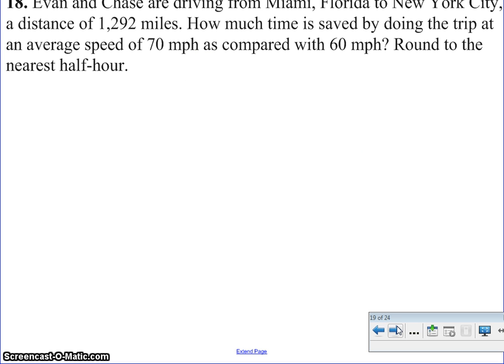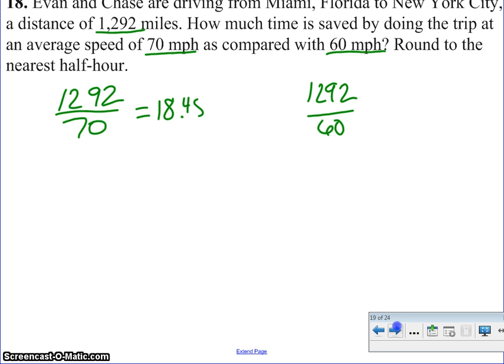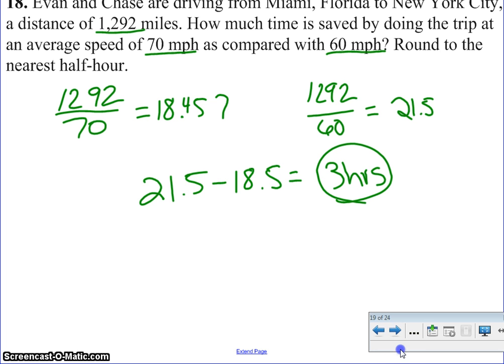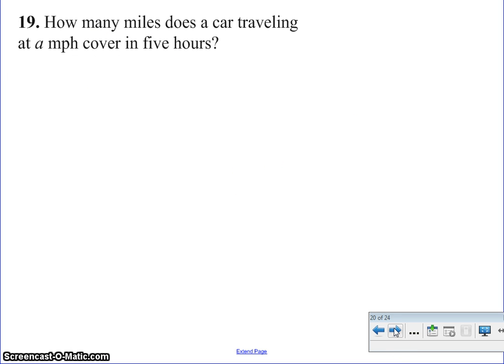Evan and Chase are driving from Miami, Florida to New York City, a distance of 1,292 miles. How much time is saved by doing the trip at 70 miles an hour versus 60? So two equations, 1292 divided by 70, 1292 divided by 60. When I divide by 70, I end up with 18.457. When I divide by the 60, I get 21.5. When I subtract it, I'm looking at 21.5 minus 18.5 in essence. So it's a difference of 3 hours. How many miles does a car drive traveling A miles an hour for 5 hours? And the answer is 5A. If it was 3 hours, it'd be 3A. If it's 7 hours, it'd be 7A.